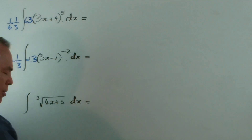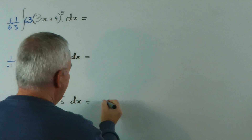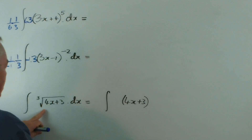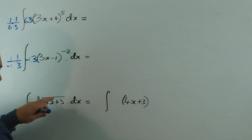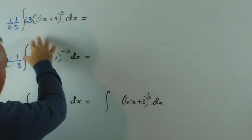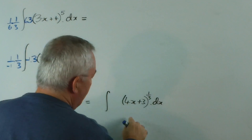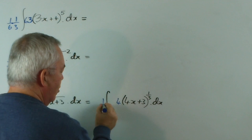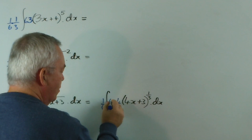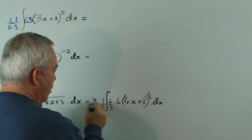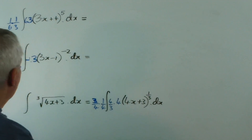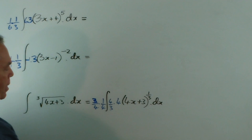This one here I'm actually going to rewrite so you can see the set-up. This is 4x plus 3, the cube root as a power of one-third dx. So again, following this kind of pattern, the derivative of 4x plus 3 is 4, so we compensate outside. One more than a third is four-thirds — so three-quarters. And now we're ready to integrate each one.